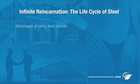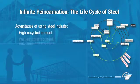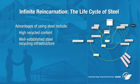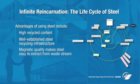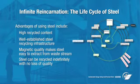One of the great environmental advantages of steel is its recycled content. Unlike other materials, the infrastructure for steel recycling is well established, and its magnetic qualities make it easy to extract from the waste stream. Moreover, steel can be recycled indefinitely with no loss in quality — a piece of steel could be a can, then a car part, and then a beam in a building, and be continually recycled.